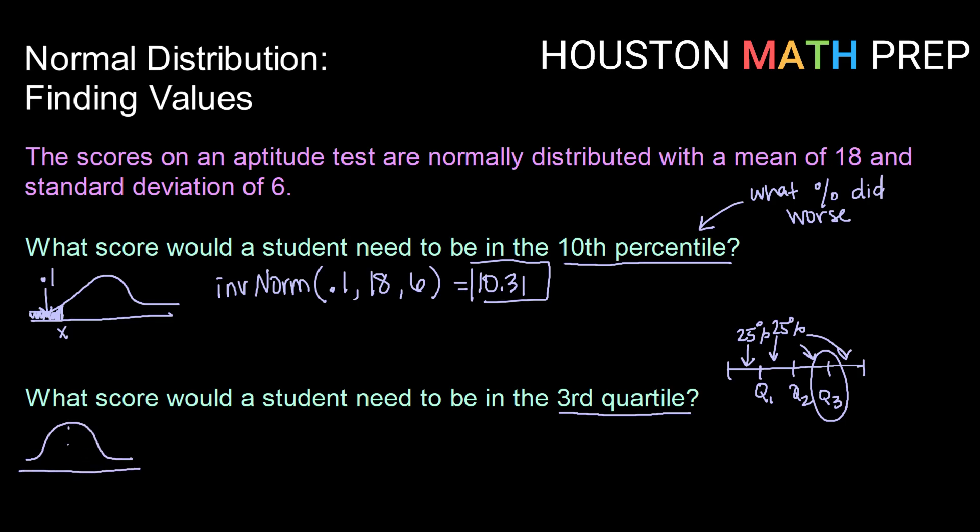So if we were to shade that in, our median, our mean, those are known as, in this case, our Q2. So Q3 would probably be about right here. And Q3 would have an area to the left of 0.75.